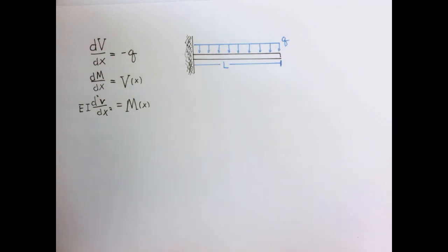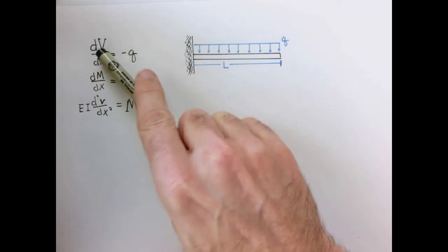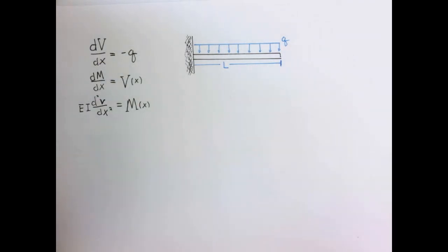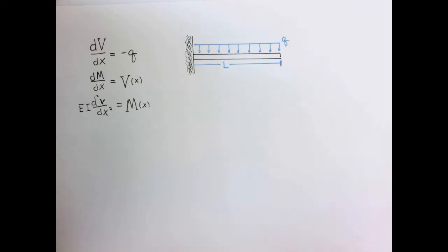Let's use the expressions we derived in the last video for the shear, bending moment, and deflection to make some computations of the shape of a beam under various loadings. As our first example, let's consider a cantilever beam of length L with a distributed load of constant value Q, measured in force per unit length. This is nothing more than a cantilever beam under its own weight.